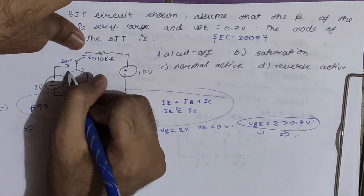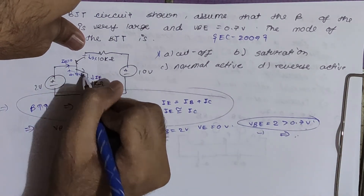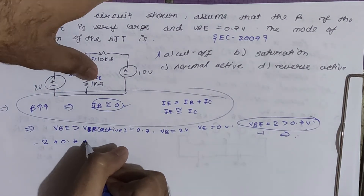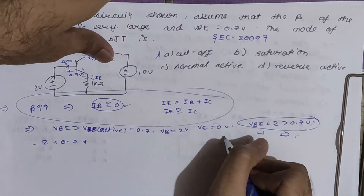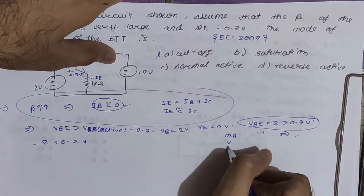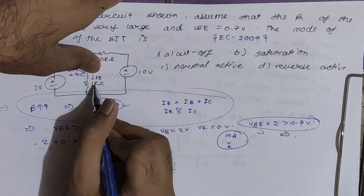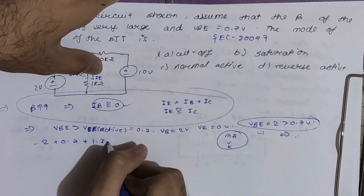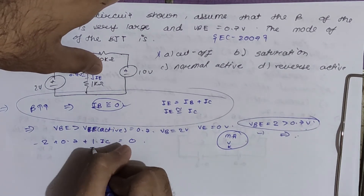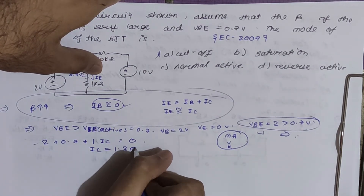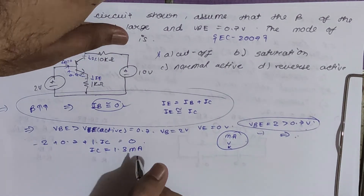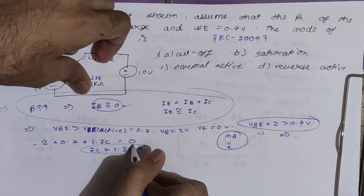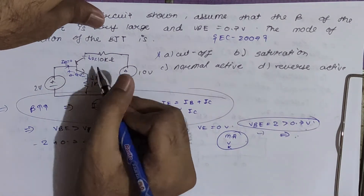Since the transistor is ON, VBE(active) = 0.7V. Applying KVL at the input side: −2 + 0.7 + 1·IE = 0. Since IE = IC, we get IC = 1.3 mA. (Resistors in kΩ, currents in mA, voltages in V.)